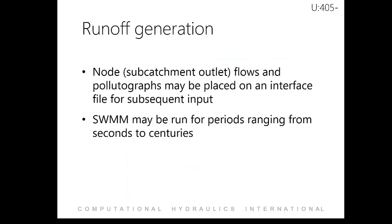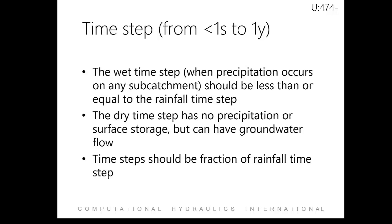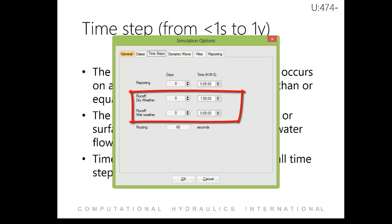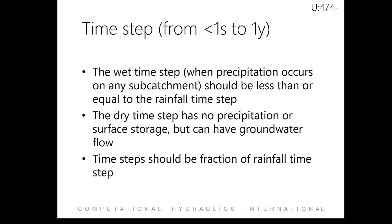It is also important to mention that SWMM 5 can be run for periods ranging from seconds to centuries. There are two time steps that need to be defined that are associated with the hydrology runoff portion of the model: a wet time step and a dry time step. Typically, the wet time step should be less than or equal to the rainfall interval entered and should be a fraction of the rainfall interval. It can be longer, but information will be lost by averaging the rainfall over a longer period.